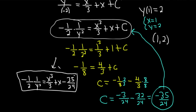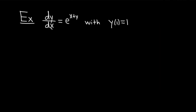Let's do another example so you can get better at this. We have dy/dx equals e to the x plus y, with the condition y of 1 equals 1, and we're going to solve this initial value problem.